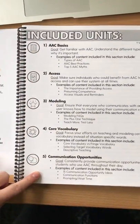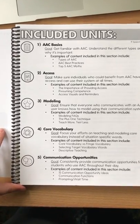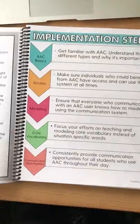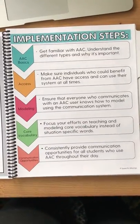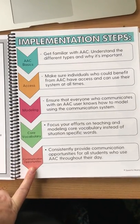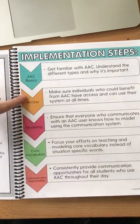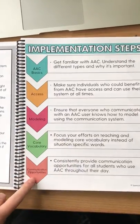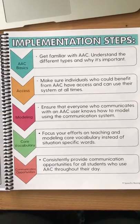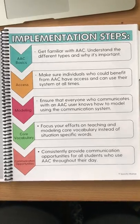There are five included units and each one targets a different AAC competency or skill for the adult. The implementation steps start at AAC basics and go all the way down to creating communication opportunities. I typically teach these in order for paras, staff, or families that are completely unfamiliar with AAC, but you can also pick and choose sections depending on your team's comfort level and skill level.